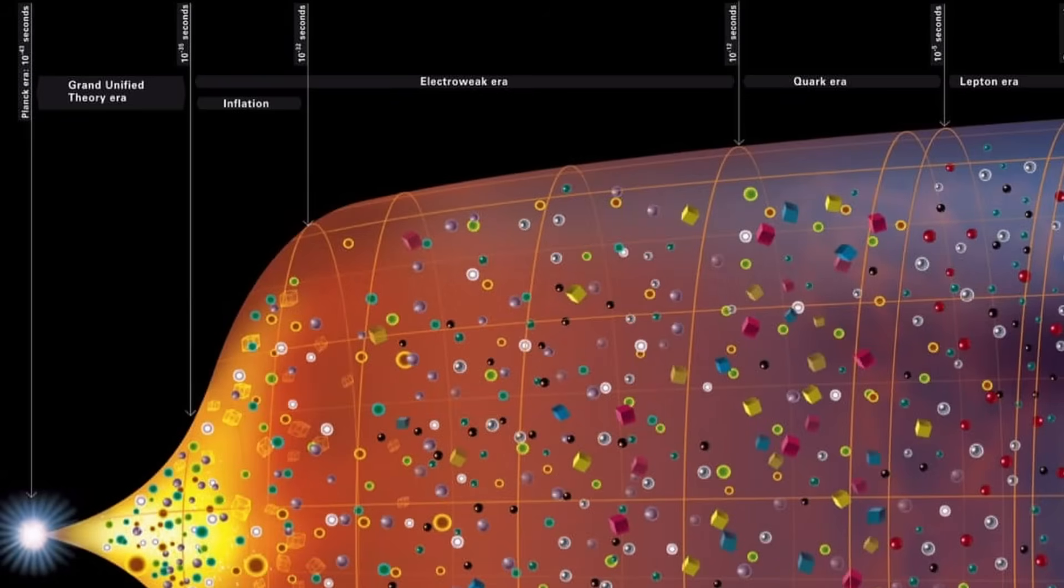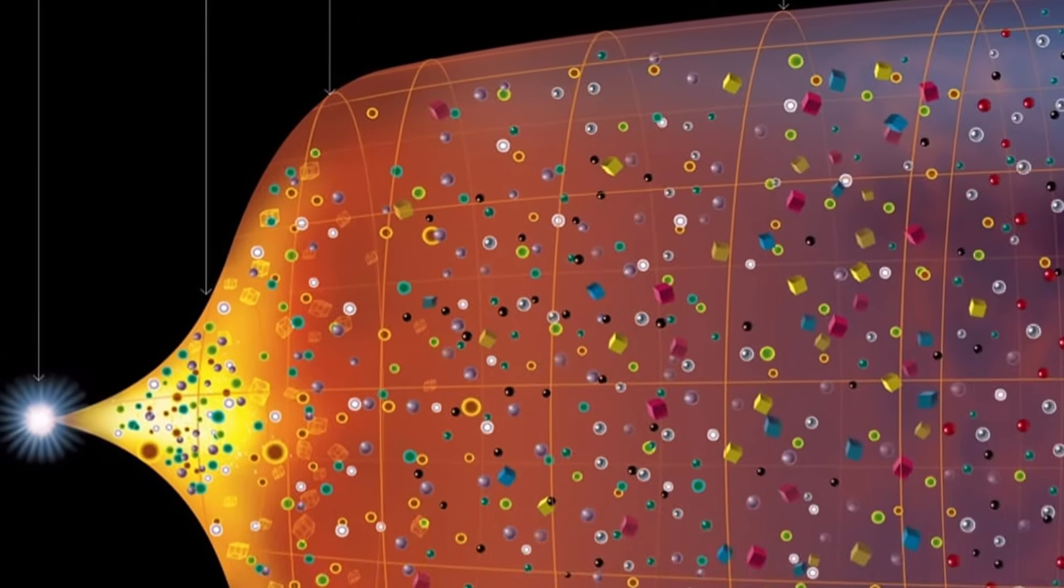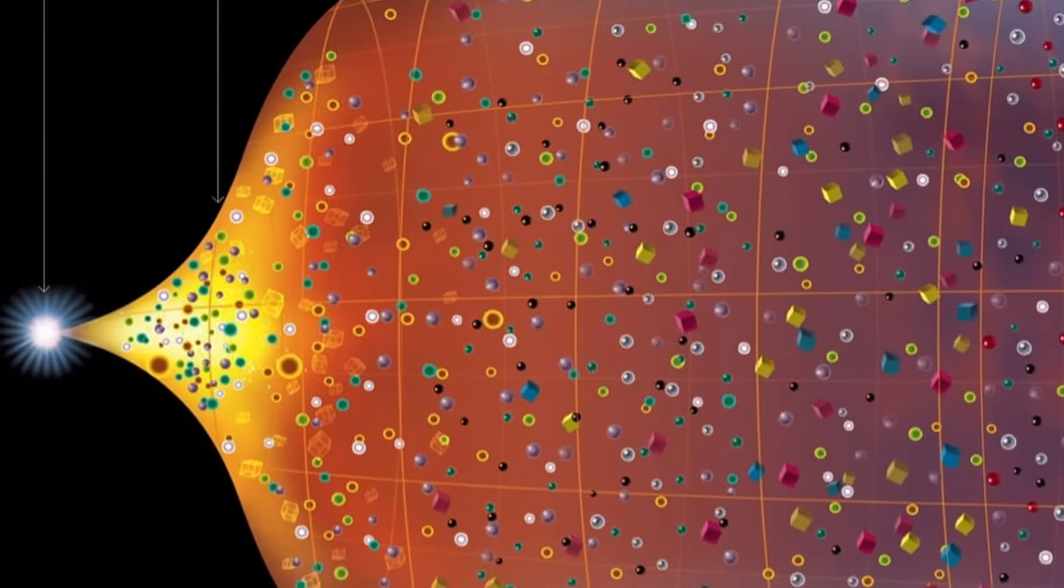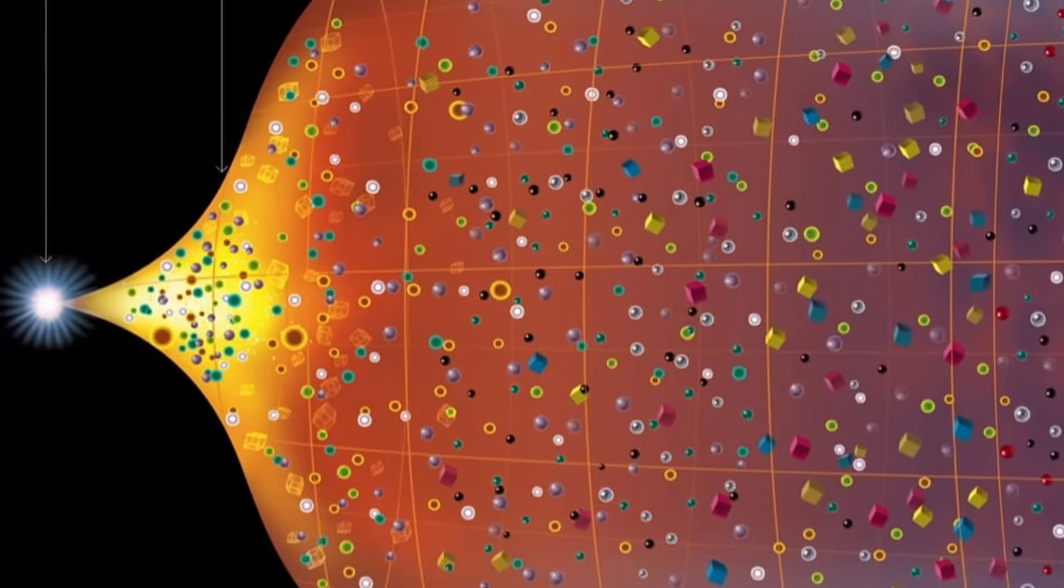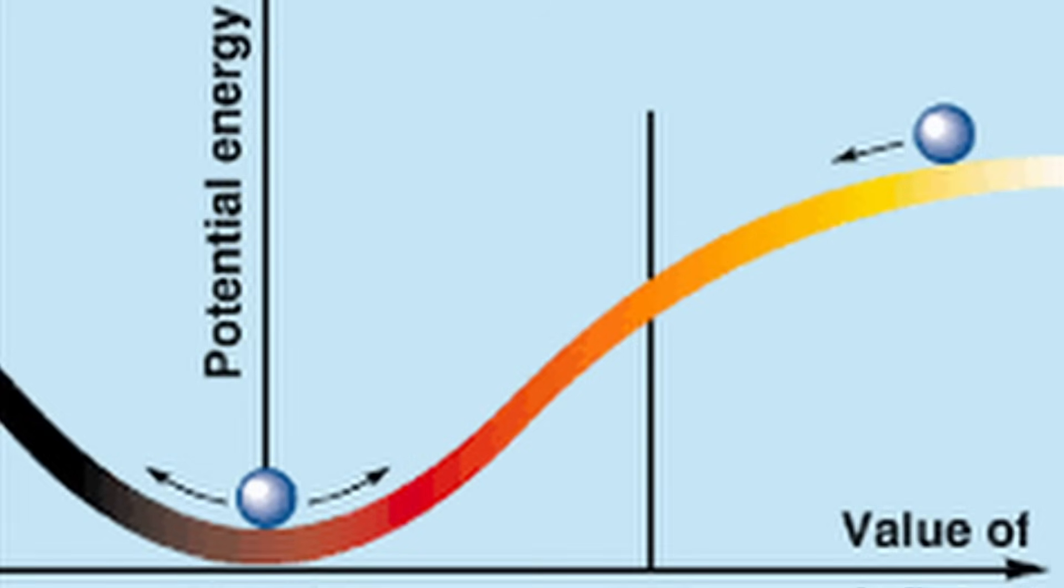A ten trillionth of a yoctosecond after the Big Bang, the Grand Unified Theory era began. The universe was roughly the size of a proton, or smaller, and around 1.8 octillion degrees Fahrenheit. The space within this incredibly tiny area had a lot of built-in energy. It could stay in this state temporarily, but it was not the lowest possible energy state. Its state was akin to a ball sitting in a shallow valley on a hilltop. It may look stable, but it could roll down at any moment to a lower energy valley.